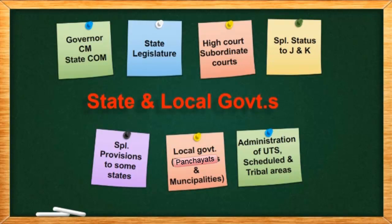So if you see: governor, CM, and state council of ministers about one and a half hours, state legislature about one hour, high court and subordinate courts about one hour, special status about one hour, special provisions about half an hour, panchayats and municipalities about two hours, and administration of UTs and scheduled areas about one hour. So this part will take about eight hours. We have spent five hours on constitution, six hours on union government, and eight hours on this part — almost 19 hours so far.